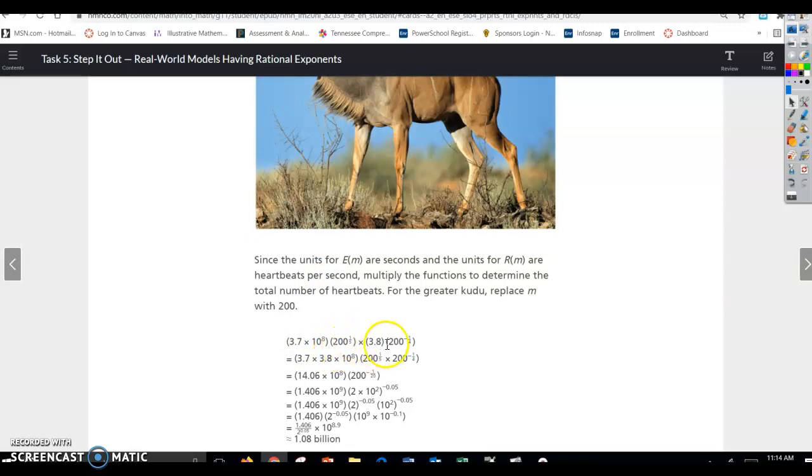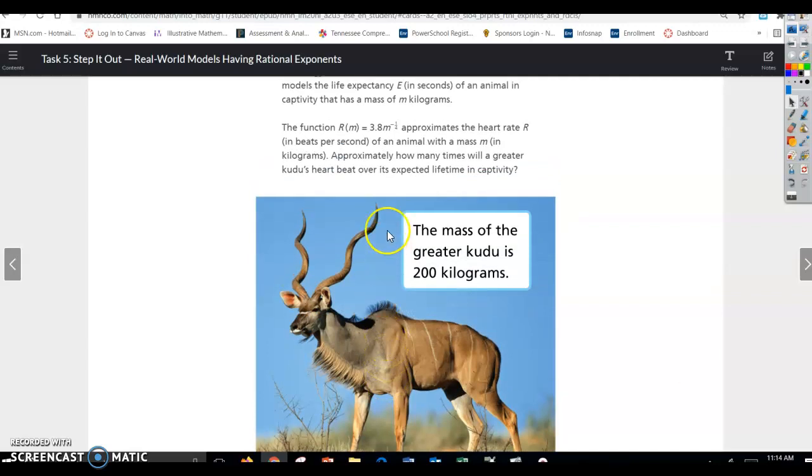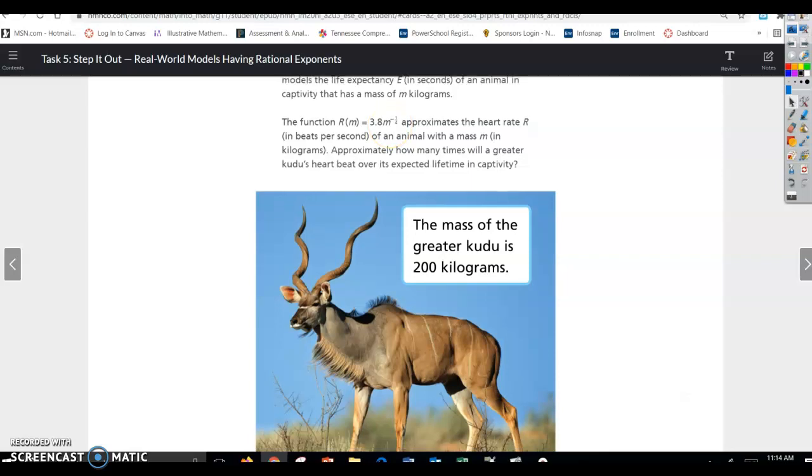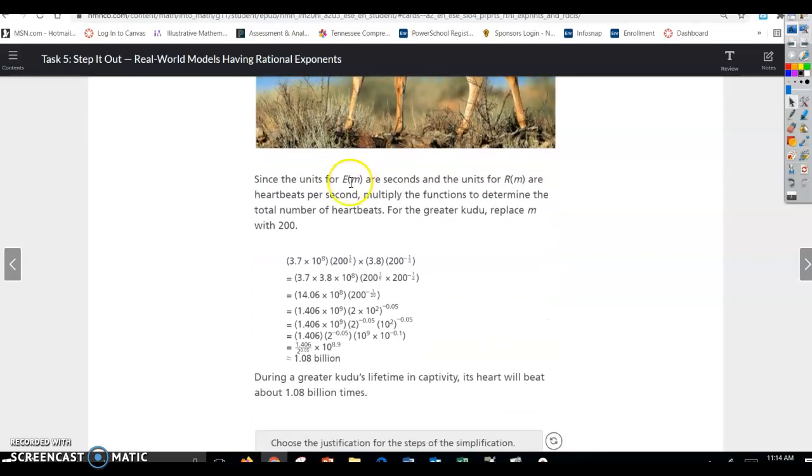So this equation here comes from the equation they gave us. If you look up here, E of m is 3.17 times 10 to the eighth power times m to the one-fifth power. So that is this first part here, except instead of m, we're replacing that with 200 for the mass of the kudu. And then we're going to multiply that by the second equation, r of m, 3.8 times m to the negative one-fourth. Again, 3.8 times instead of m, we're going to replace that with the 200 and raise to the negative one-fourth power.